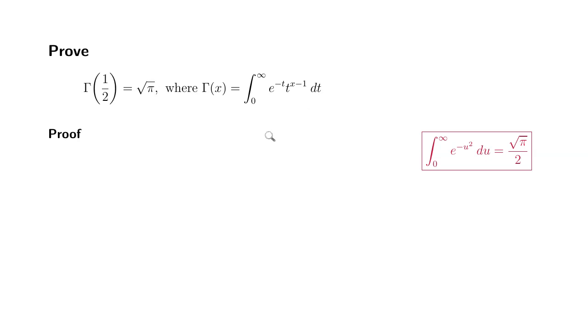So I'm going to assume that we already know how to compute the integral from 0 to infinity, e to the negative u squared with respect to u, which is equal to square root of pi over 2.